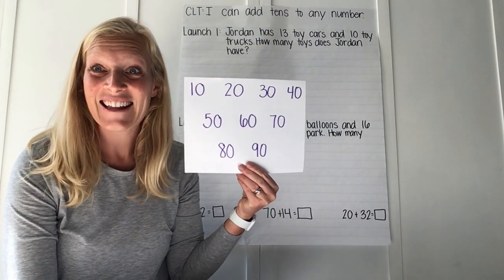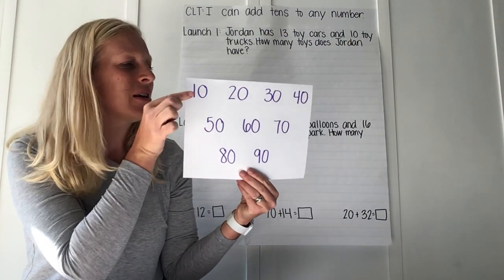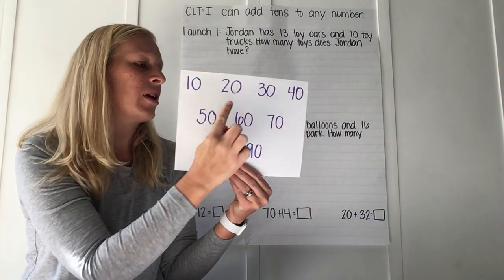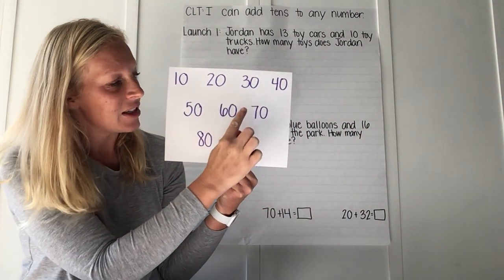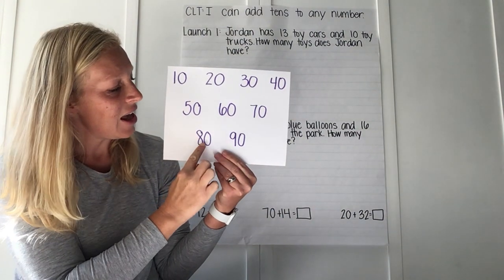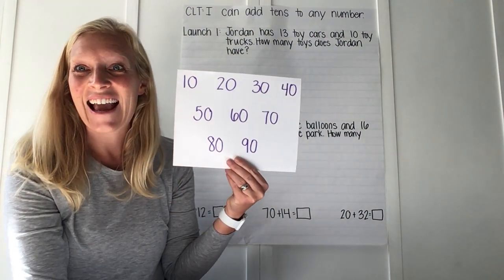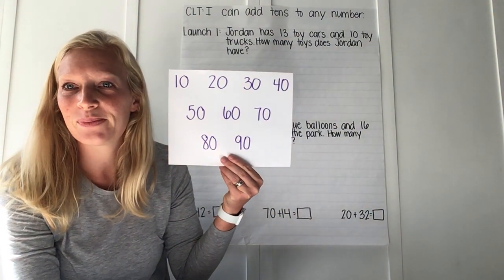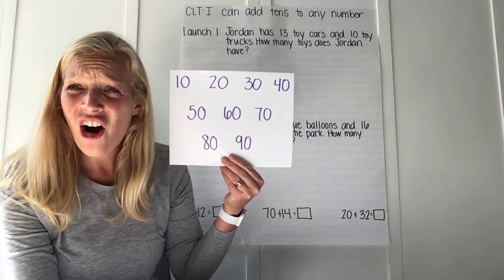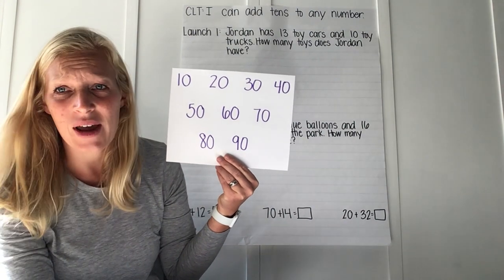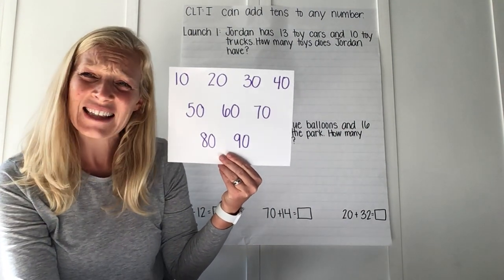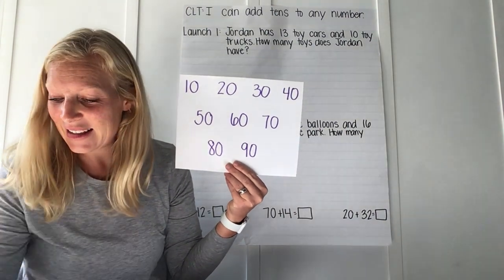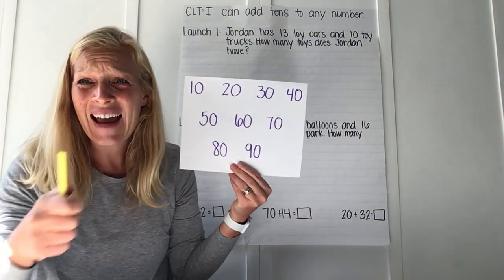They're counting by tens. Can you guys do that with me? 10, 20, 30, 40, 50, 60, 70, 80, 90. Yes, when we count by tens we say those numbers. What else do we know about those numbers? They all have a zero in them. What place is that zero in? It's in the ones place. If I have a 10, are there any little ones that are extras?